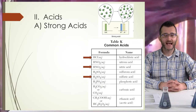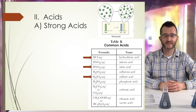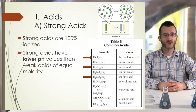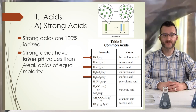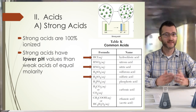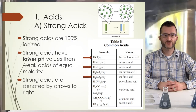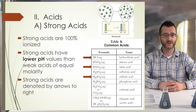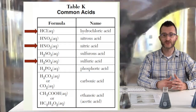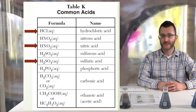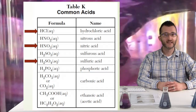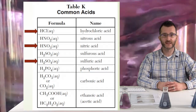Continuing on with strong acids specifically: strong acids are 100% ionized and have lower pH values than weak acids of equal molarity, because they're more acidic. Strong acids are denoted by arrows to the right. Looking at Table K, we see HCl aqueous (hydrochloric acid), HNO3 aqueous (nitric acid), and H2SO4 aqueous (sulfuric acid) — all strong acids.